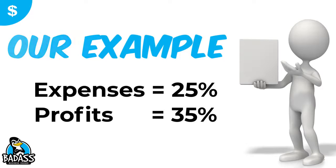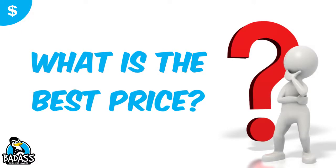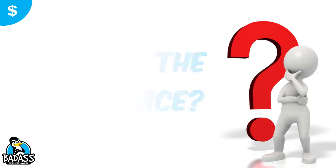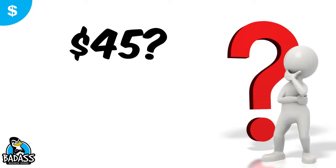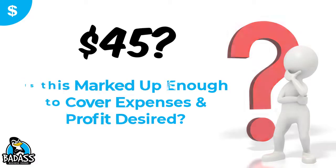So what price are we thinking? When looking at competitors, the right price is around $45. We have something a little better than our competitors, so we want to shoot for $45. Now we're going to use those percentages to work backwards and see if we've marked it up enough — taking it from $15 up to $45, assuming that $30 spread is enough.